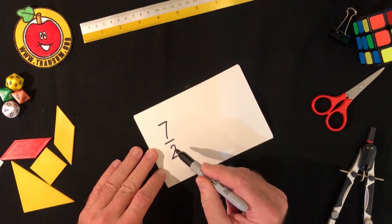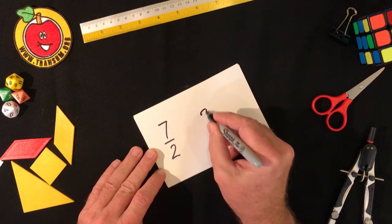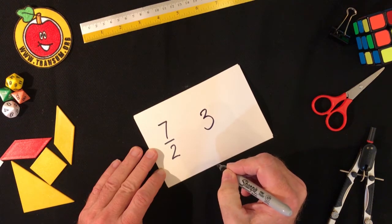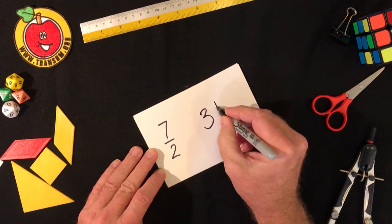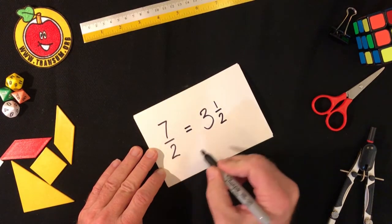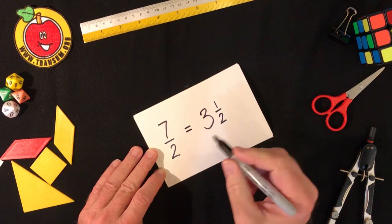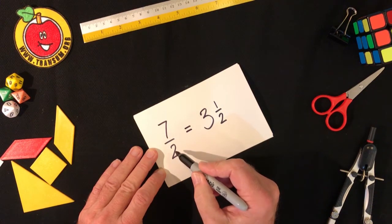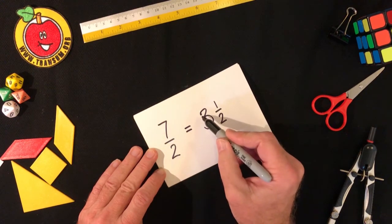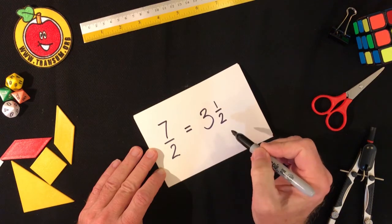Well there are three twos in seven so there must be three whole ones with one left over. So the answer is seven over two can be written down as three and a half. What we did was we asked ourselves how many twos will go into seven? The answer was three with one left over, one half.